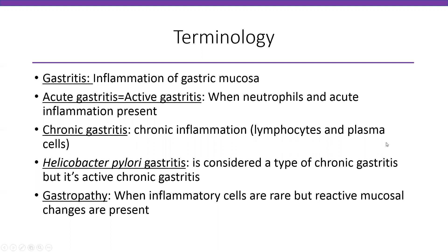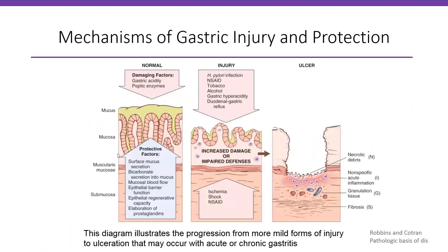Chronic gastritis means you have chronic inflammation — in pathology that translates to lymphocytes and plasma cells, which are present when inflammation has been going on for a longer period. In particular, Helicobacter pylori gastritis is considered a type of chronic gastritis, but in reality you have active chronic gastritis — both lymphocytes and plasma cells plus neutrophils. Gastropathy is when inflammatory cells are rare but reactive mucosal changes are present.